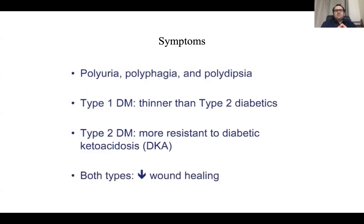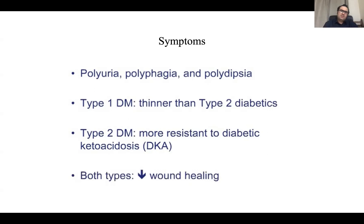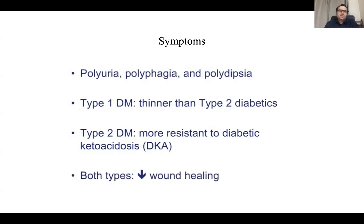The most common presentation of diabetes is actually asymptomatic, diagnosed on screening. The patient may have no symptoms or may have non-specific symptoms attributable to other causes. But when blood sugars go to 300 or 350, the patient develops polyuria, polyphagia, and polydipsia. Type 1 diabetics are thinner than type 2. Type 2 diabetics are more resistant to decay, and both types have decreased wound healing.